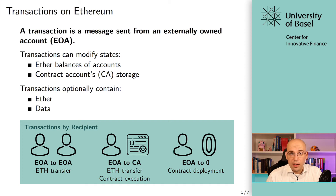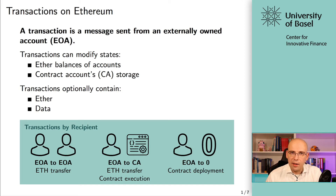With EOA to CA — externally owned account to contract account — you can also transfer some value if the smart contract accepts it, but usually what you're doing is contract execution. You're picking one of the functions of the smart contract and interacting with it, sending parameters and arguments along with the transaction. Then the function gets executed depending on what you have sent. That's the second form. The third form is contract deployment, where you're creating a new smart contract by sending the transaction to the zero address with the deployment code as data.